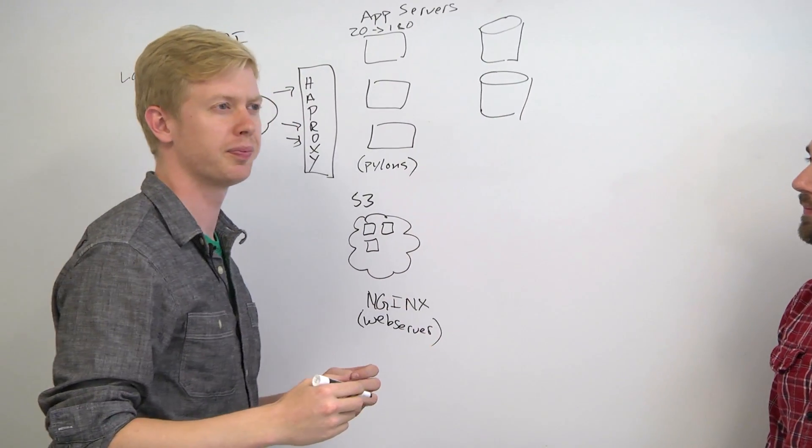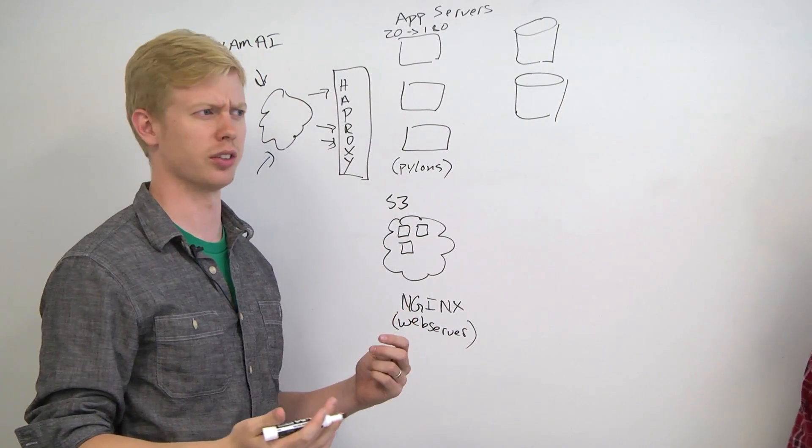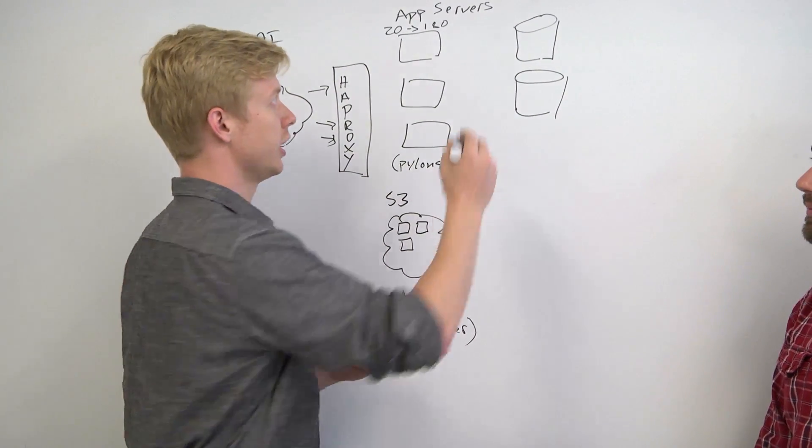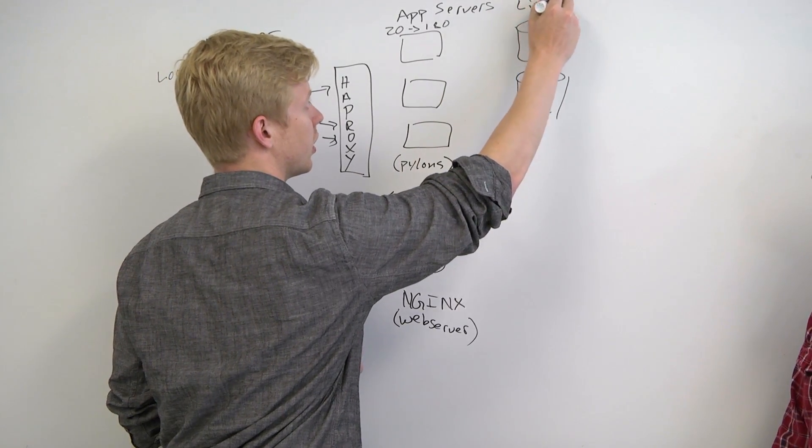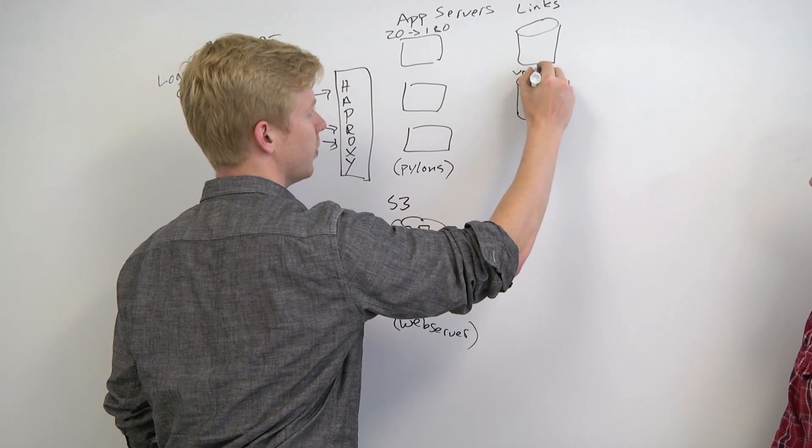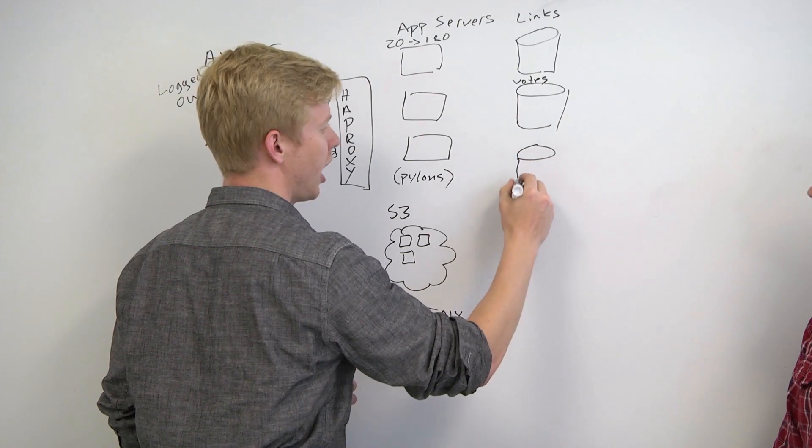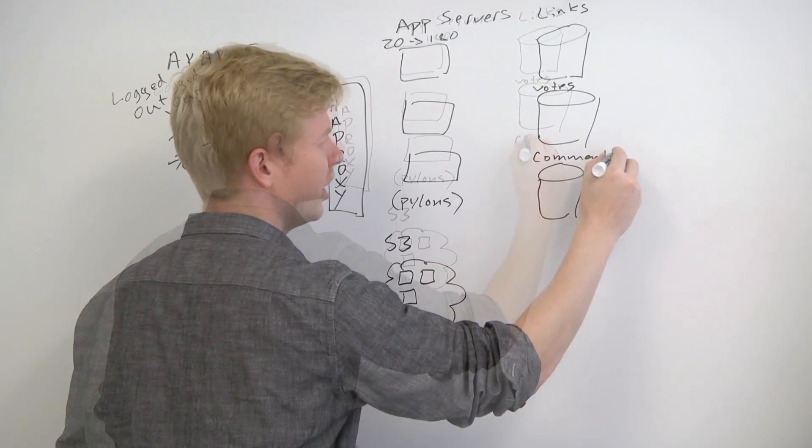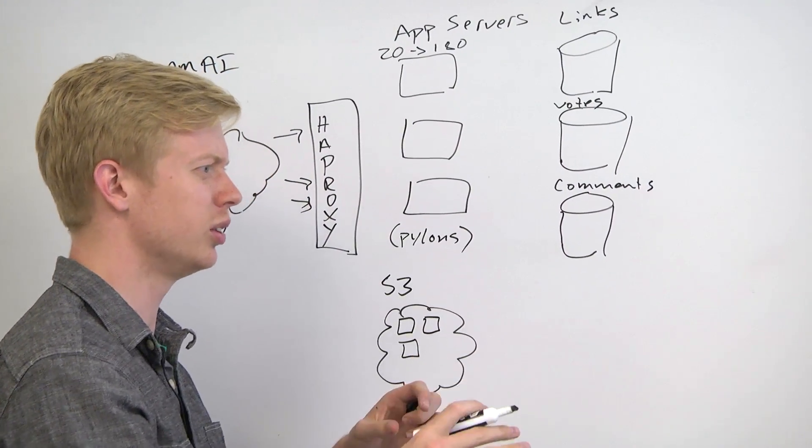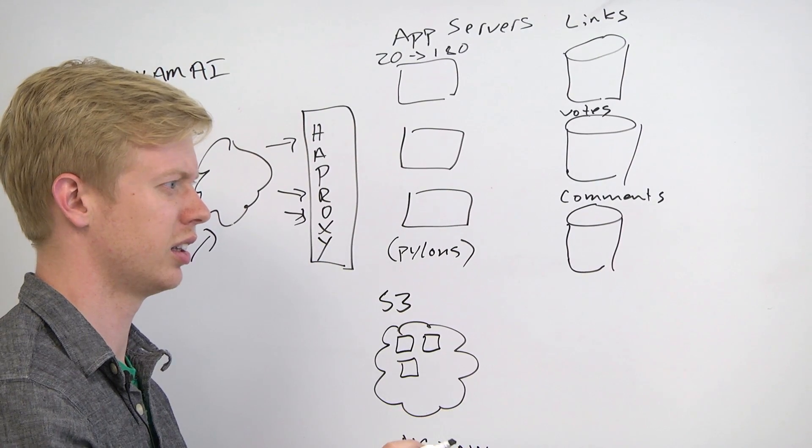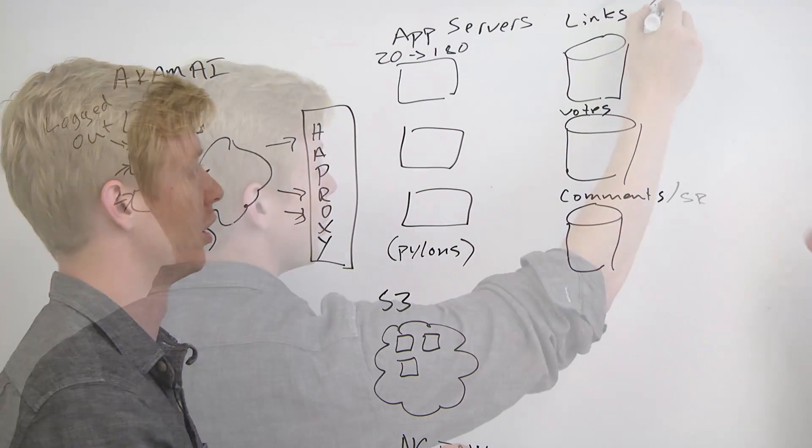These were, we had a couple of verticals. I think we stored links on one, votes on another, comments were on one, and then we had a miscellaneous one. Did we store subreddits and users on the same one or something like that? Subreddits were with comments, users were with links.